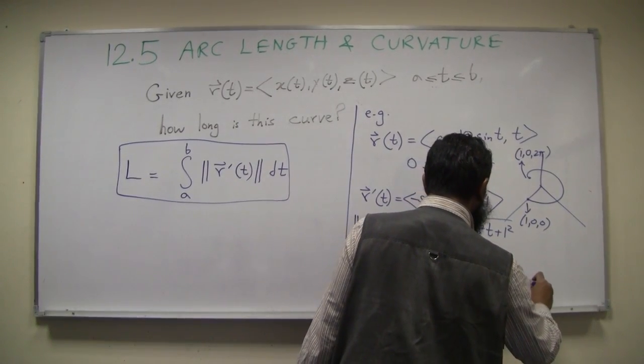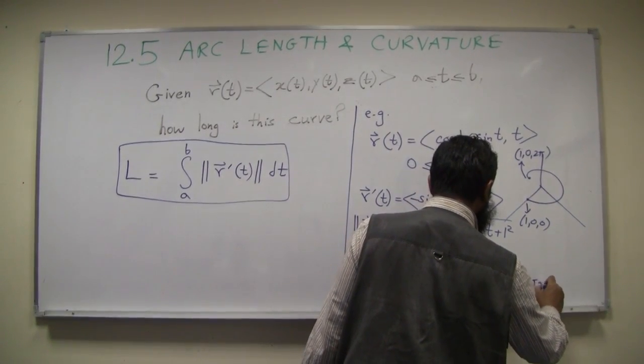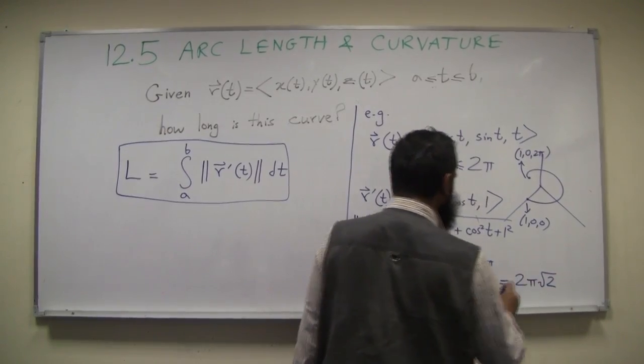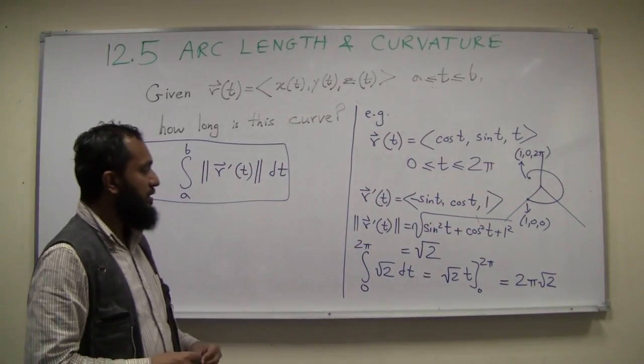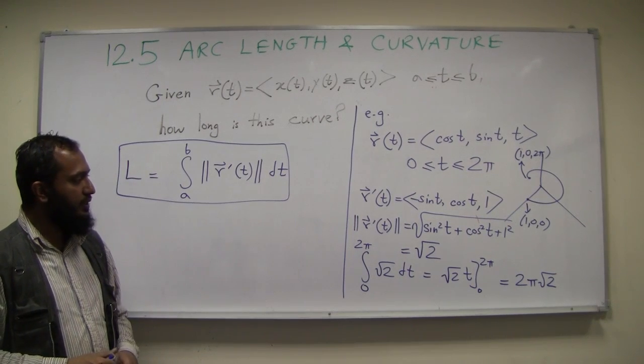So when I plug it in, you just get 2π square root of 2. This shows us one example how we will use this calculation to actually compute this thing.